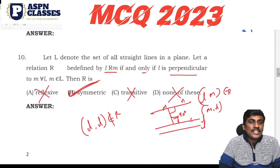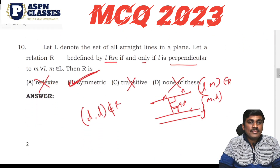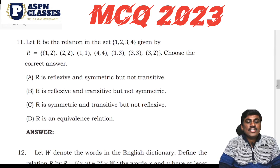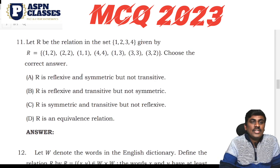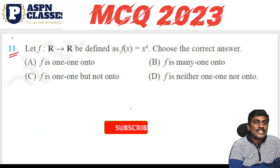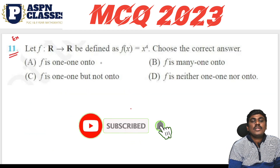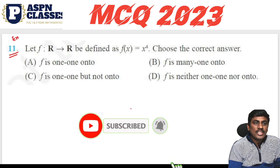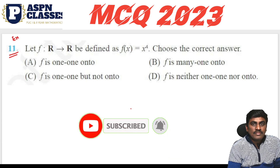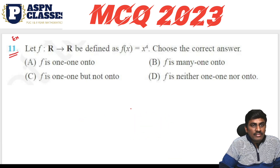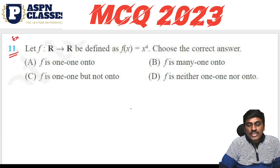In the last class I completed 10 questions, so in this class I will start from question number 11. I completed the relations part in the first class, and the following class will check functions. Let's look at question 11 now.